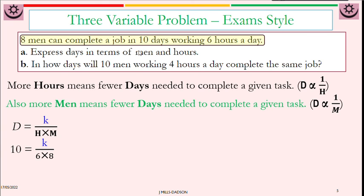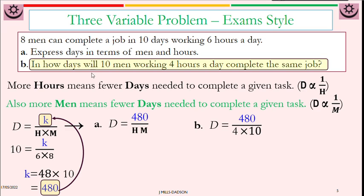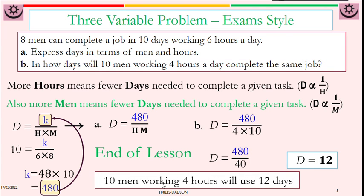Use the initial values 10 days and 6 hours to find your K. So 10 equals K over 6 hours and 8 men. So K will be 480. So the explicit formula will be D equals 480 over H times M, where H is hours, M is the number of men. Now we can use the formula to work out part B. Given this formula, men is 10, hours is 4. So which means 4 times 10. And if you divide 480 by 40, you realize that D equals 12. So 10 men working 4 hours will use 12 days. And it makes sense.